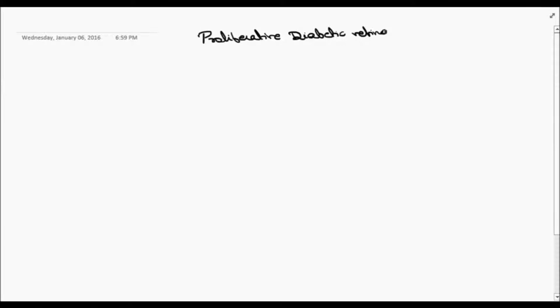Proliferative diabetic retinopathy is divided into three types. The first one is called neovascularization of the disc.